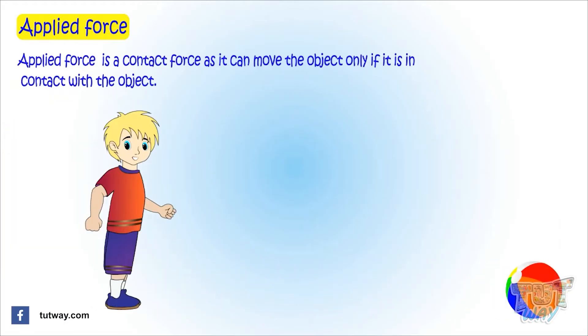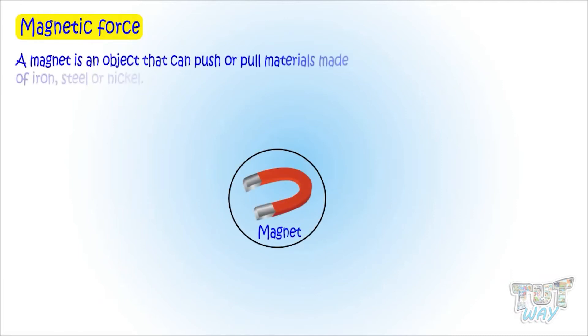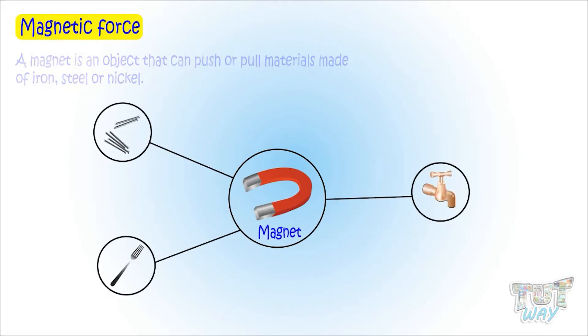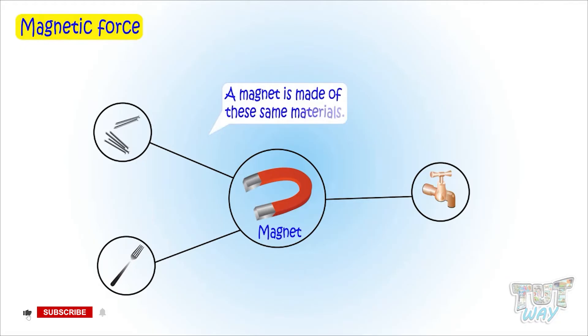Now let's see what is a magnetic force. A magnet is an object that can push or pull materials made of iron, steel or nickel. A magnet is made of these same materials.